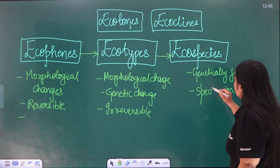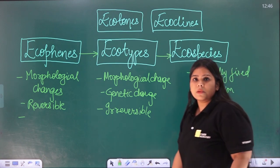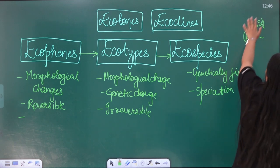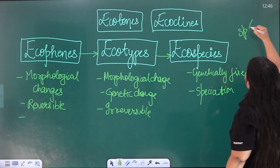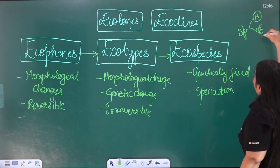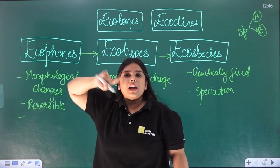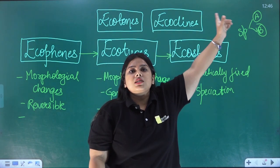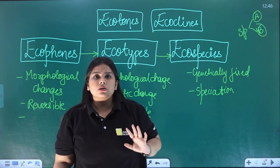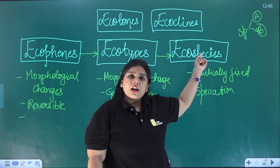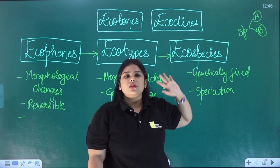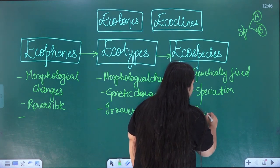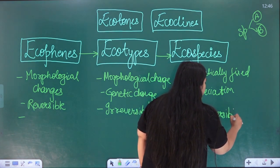Over a very, very long time period, if individuals A and B are separate, individual A can become a different species and individual B can become a different species. In evolutionary terms, at that point we call them eco-species. Eco-species — this is also irreversible. Obviously, when there is speciation, it will be irreversible.